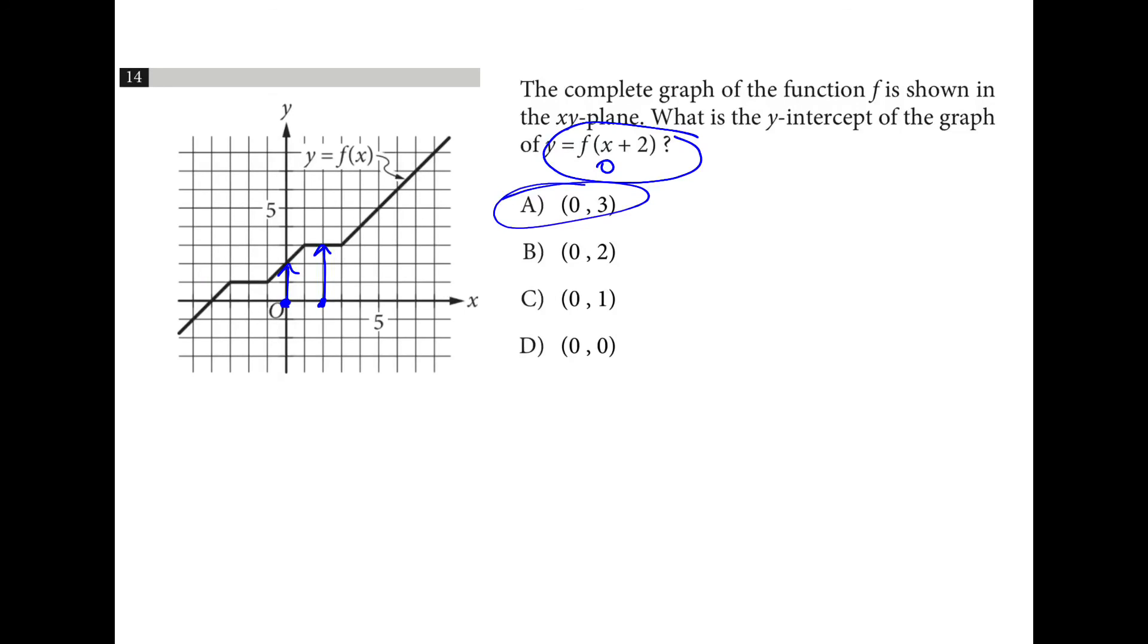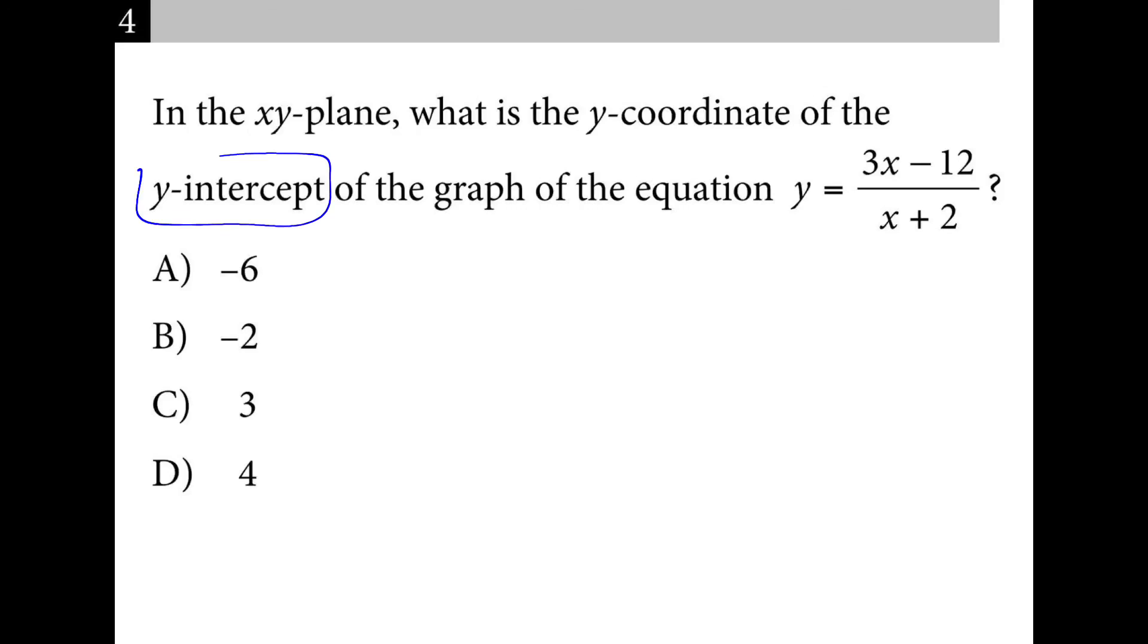I'm still plugging in 0 for x, but the y value changes because I'm evaluating the function at 2 instead of 0. To find the y-intercept, I plug in a 0 for x wherever it is. So this leaves me with negative 12 divided by 2, which is negative 6.